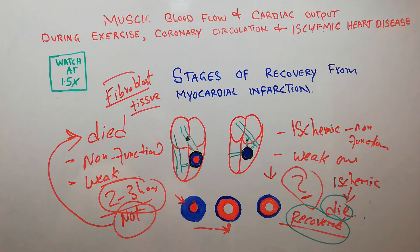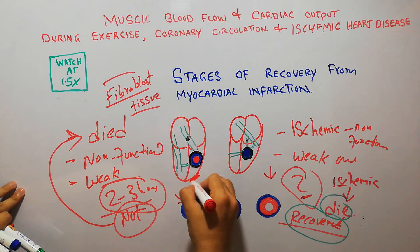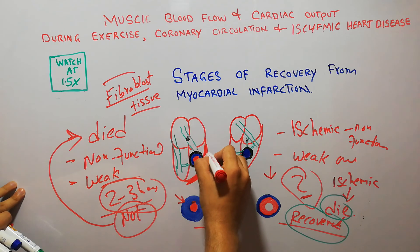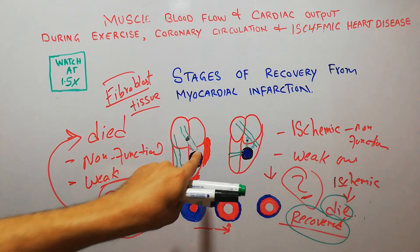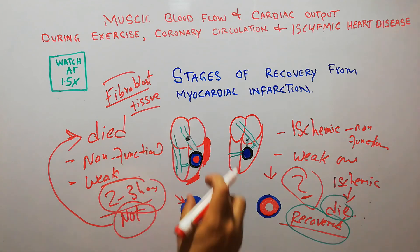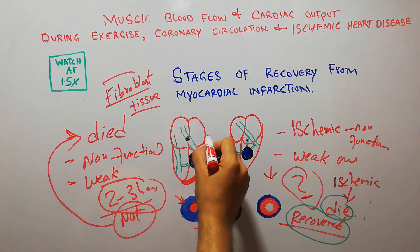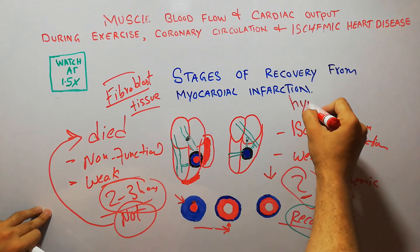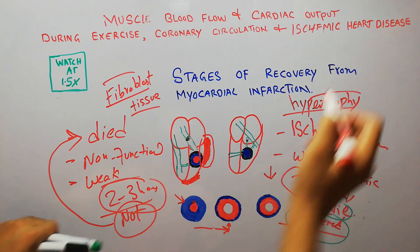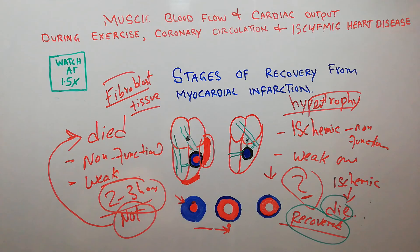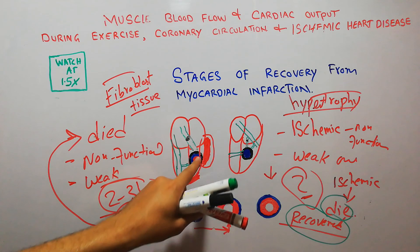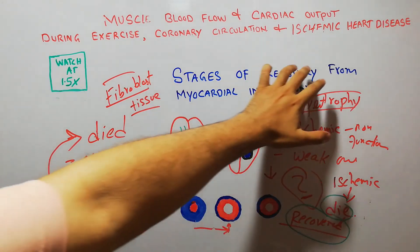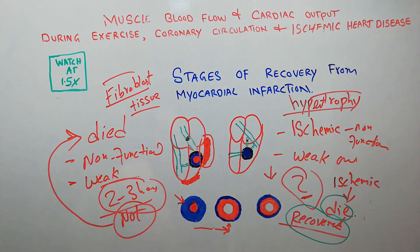Finally, there will be hypertrophy of the surrounding muscle. To compensate for the area that has died and been converted to fibrous tissue, the surrounding heart muscle increases in size — it hypertrophies — to compensate for the weakness that has developed. That covers the stages of recovery from myocardial infarction. Thanks for watching.